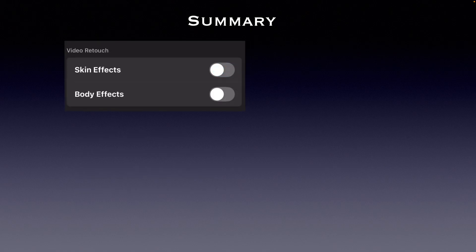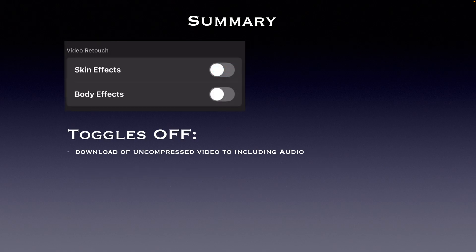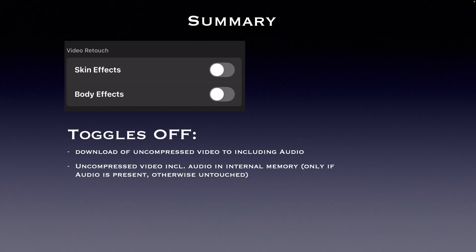With the toggle switch set to off, the DJI Fly app downloads the original bitrate video that will include the audio. The video on Neo2's internal storage is also updated with the audio mixed in, but the video remains in its original bitrate.